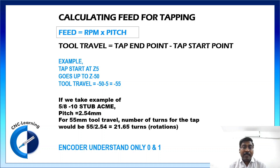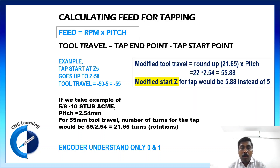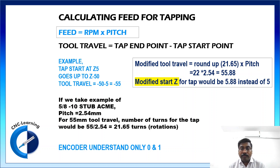As per Mr. Khare's research, the encoder does not understand a decimal number of turns. It either understands 21 or 22. So we need to modify the tool travel so that it becomes a whole number. We round up 21.65 to 22.